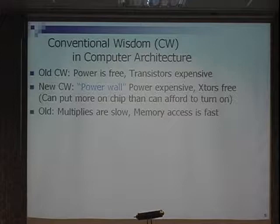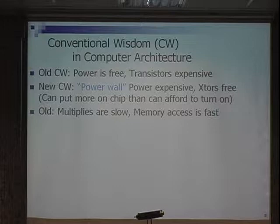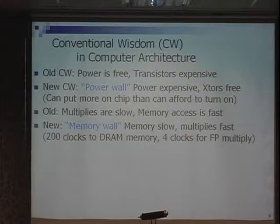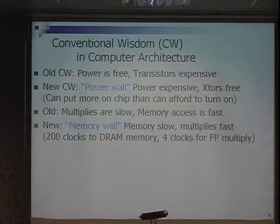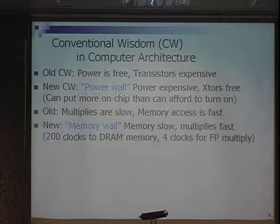Second wall: when I was in school, multiplies were slow — floating-point multiplies were ridiculously slow — but loads and stores were fast. What's the world today? A memory wall: memory is slow, multiplies are fast. In a modern microprocessor it could take easily 200 clock cycles to go to DRAM. A floating-point multiply is just a couple of clock cycles. If you can actually get rid of a load — it's only 10 floating-point multiplies — that might be a good trade-off, but it's hard to wrap your mind around that.